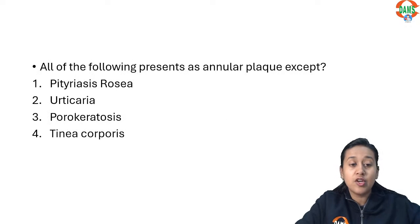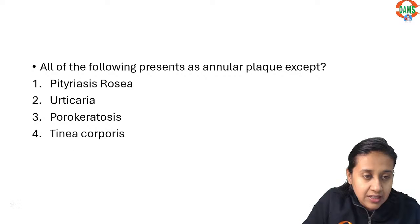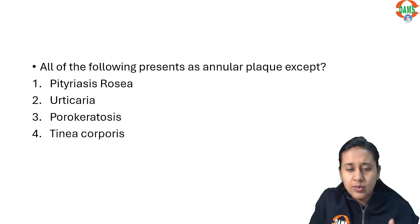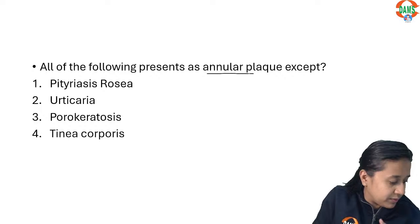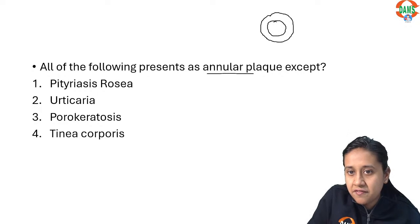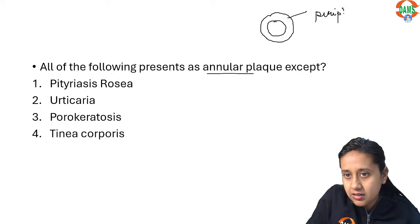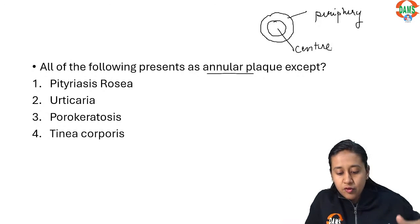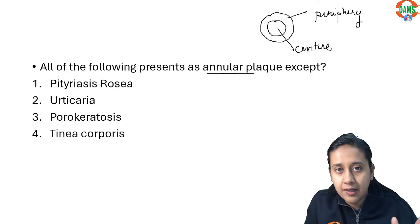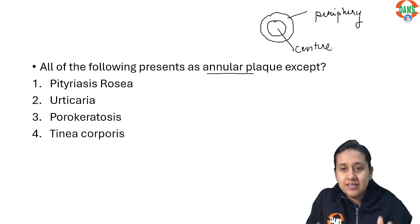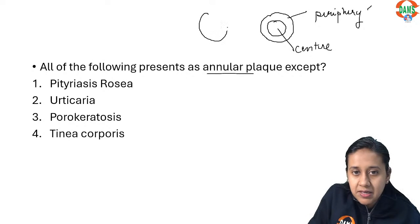The first question from dermatology was: all of the following present as an annular plaque except. This is a very easy question. First, you should know what annular means. Annular means the lesion has a consistency which is different at the periphery compared to the center. A plaque is a horizontally elevated lesion of more than one centimeter. If the plaque has different consistency on the periphery and in the center, it becomes an annular plaque. If the consistency is the same throughout, it becomes a discoid plaque.